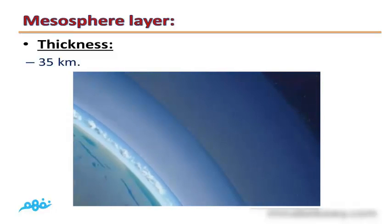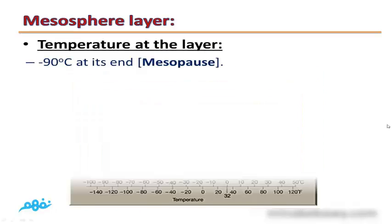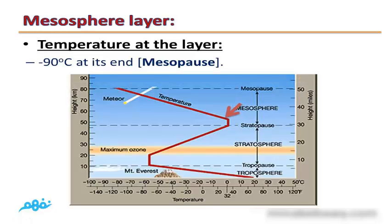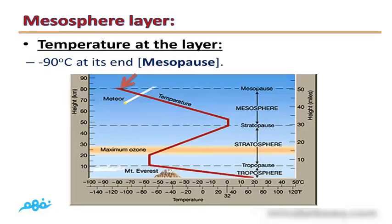The Mesosphere has a thickness of 35 km. The temperature at this layer decreases gradually, starting at 0 degrees Celsius at its beginning, then decreasing until it reaches negative 90 degrees Celsius at its end at the Mesopause.